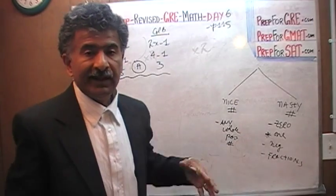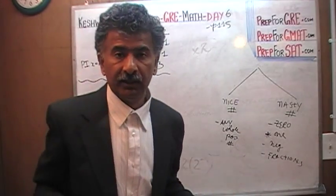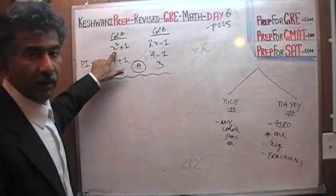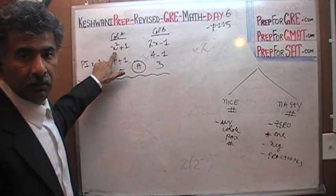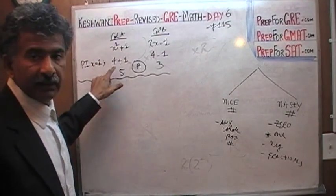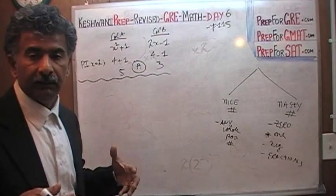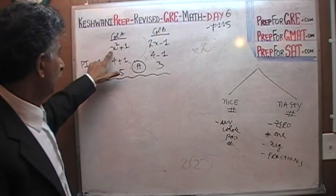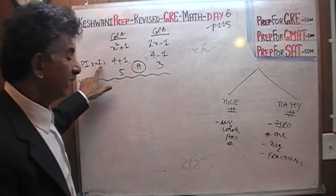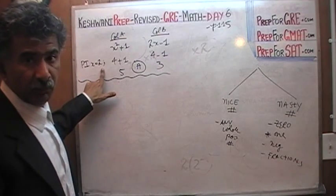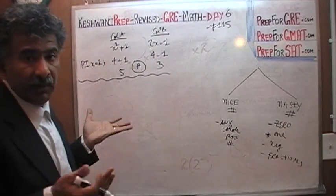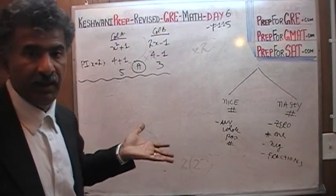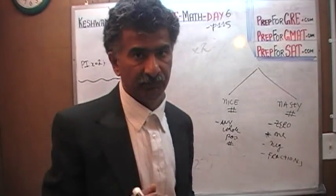Nasty numbers are 0, 1, negatives, and fractions. Notice: 1 is an exception. Even though 1 is a whole positive number, it is considered a nasty number. It's nasty because nothing happens to it. If you have x squared and you plug in 2, x squared is 4 — it evolves. But if you were to plug in 1, 1 squared remains 1. It's a weird, nasty number that behaves in an unpredictable manner.